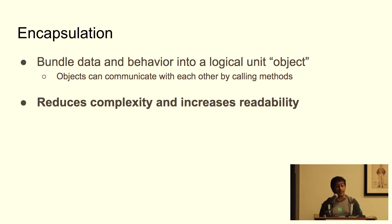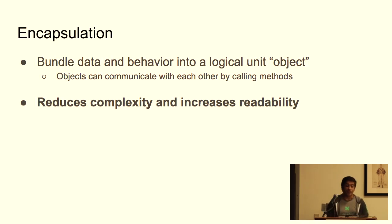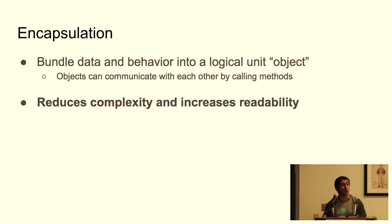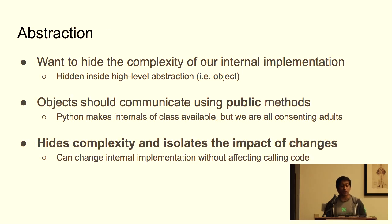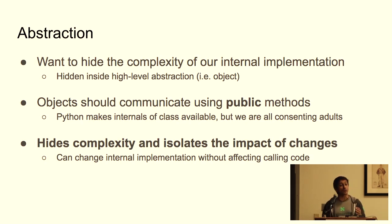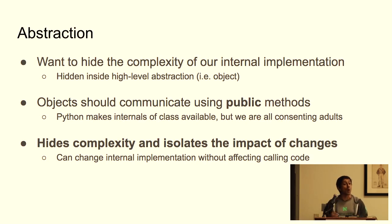Encapsulation bundles data and behavior into a single logical unit we call an object — it reduces code complexity and increases readability. Abstraction allows us to hide the complexity of internal implementations inside our objects. It's recommended that when objects talk to each other, they do so by calling each other's public functions. Abstraction helps us hide complexity and isolate changes — if we ever want to change internal implementations, we don't have to change the calling code.